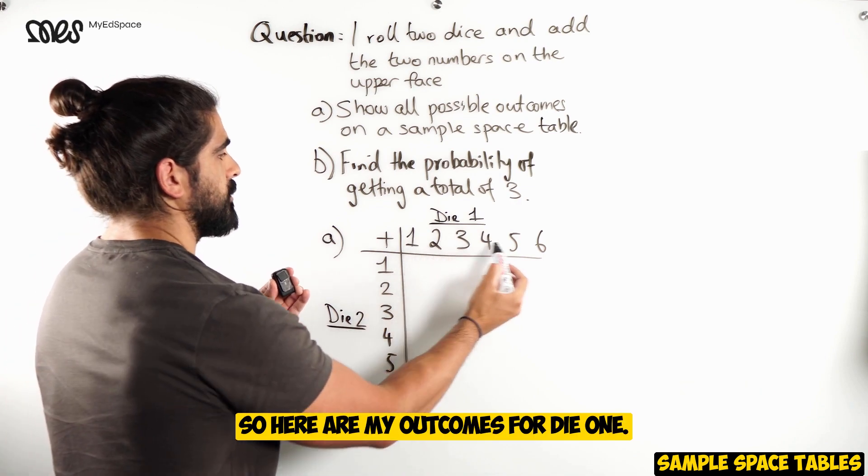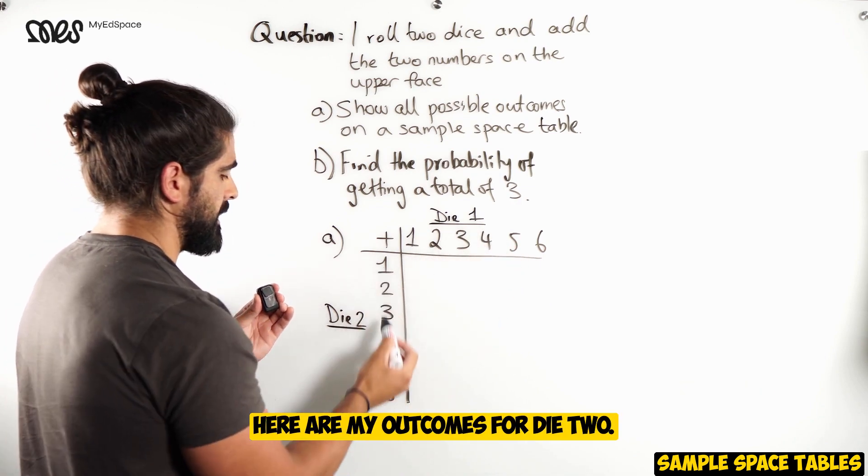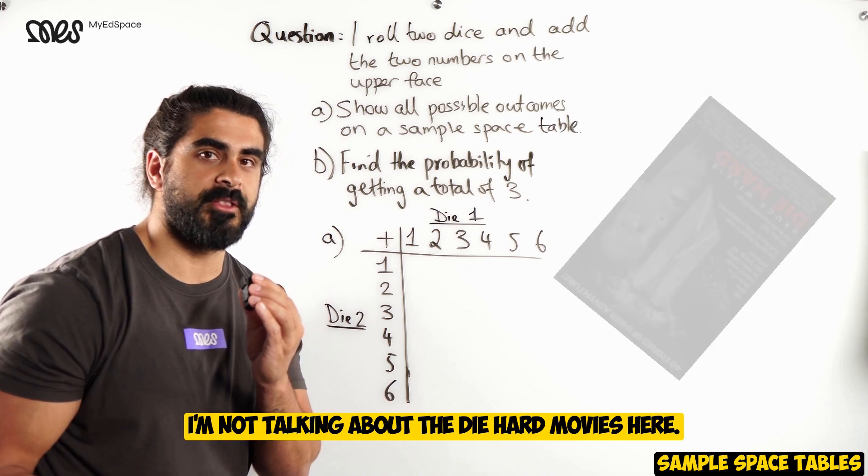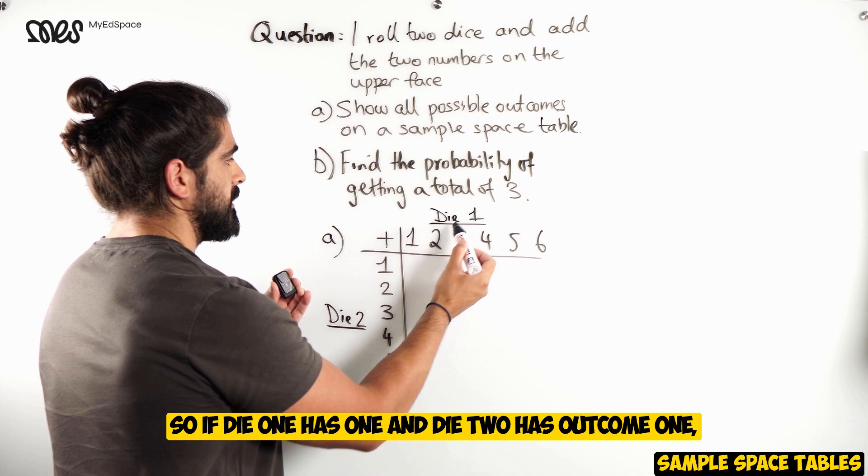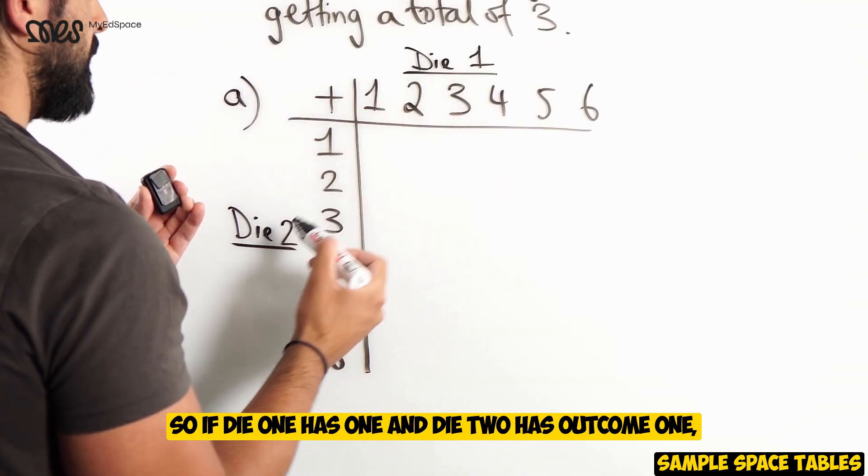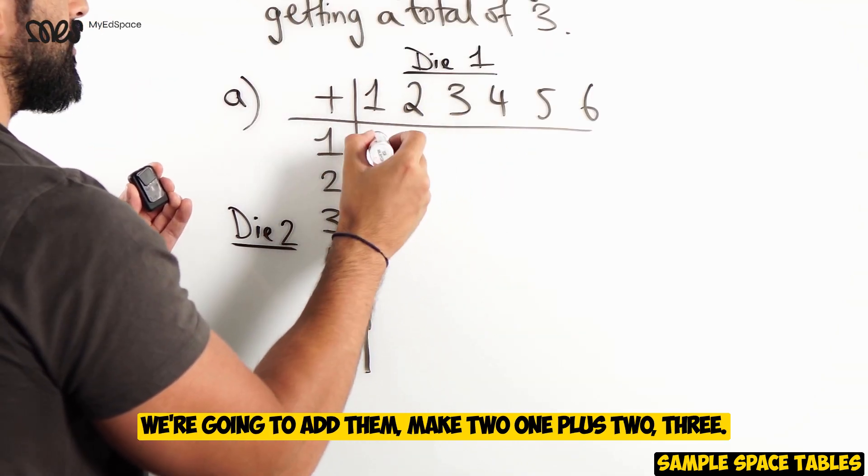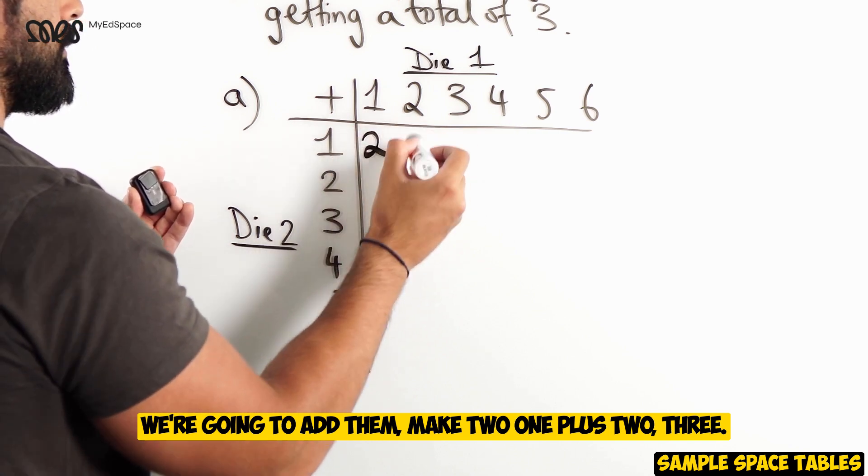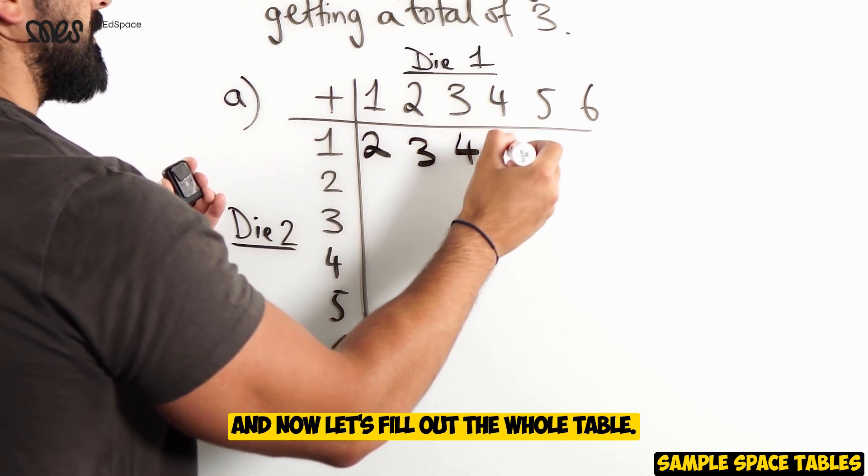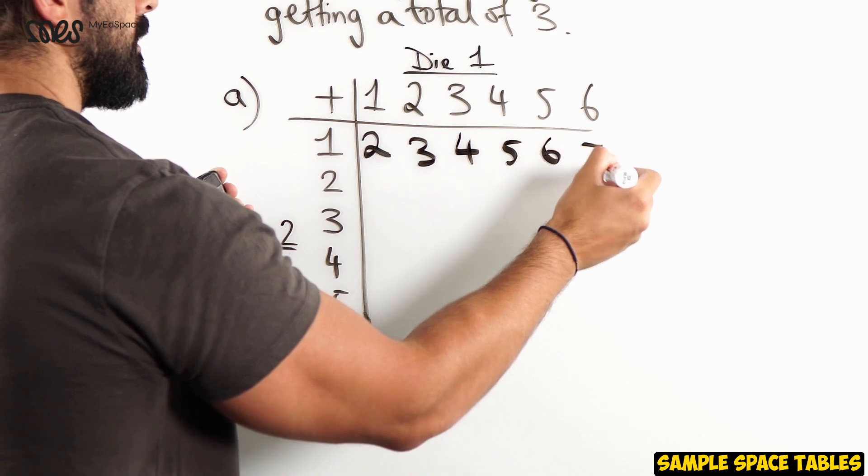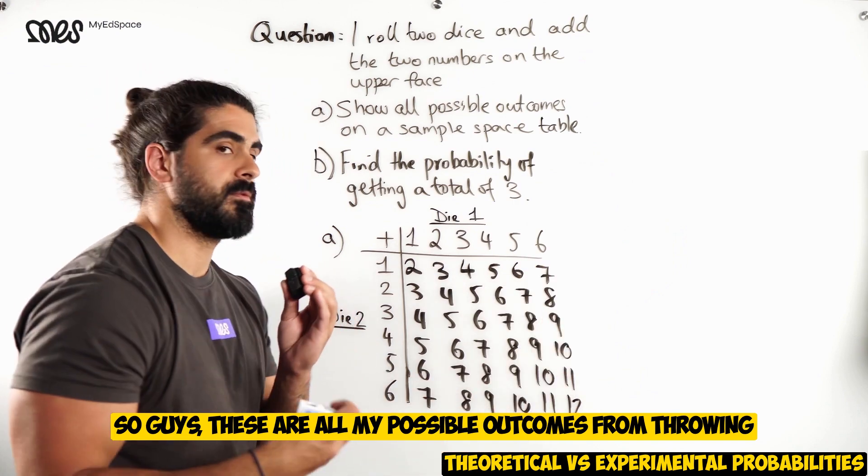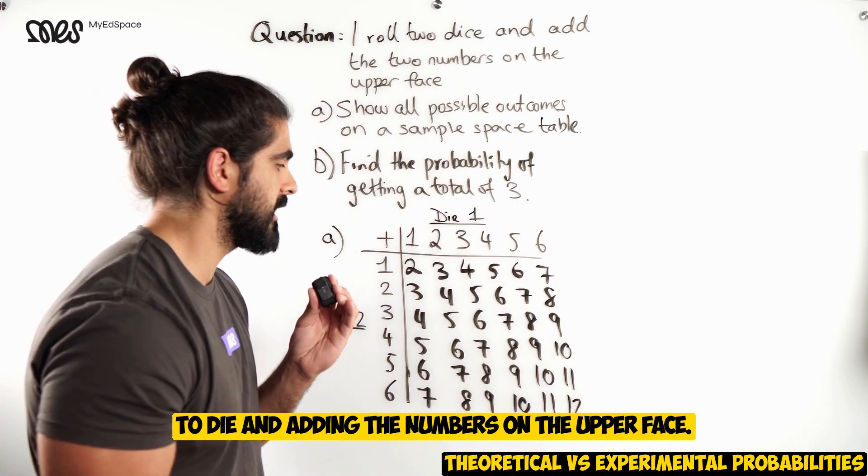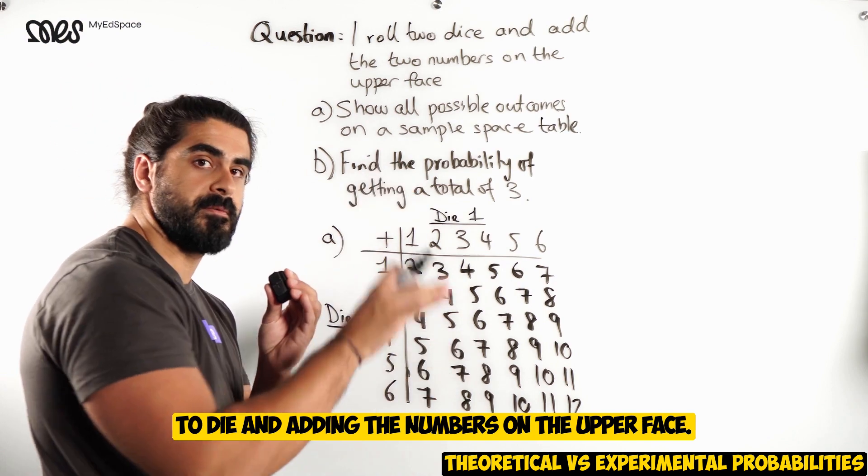So, here are my outcomes for die 1. Here are my outcomes for die 2. I'm not talking about the die-hard movies here. What we're going to do is we're going to add up my outcomes. So, if die 1 has 1 and die 2 has outcome 1, we're going to add them, make 2, 1 plus 2, 3. And now, let's fill out the whole table. So, guys, these are all my possible outcomes from throwing two die and adding the numbers on the upper face.